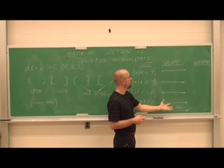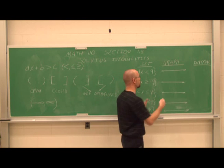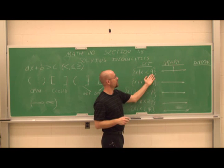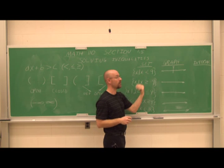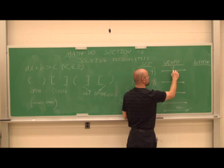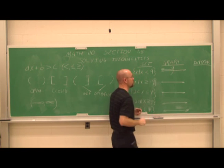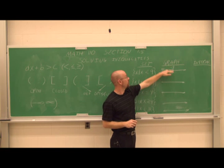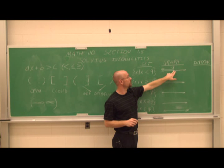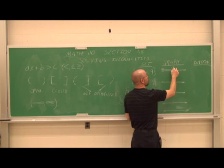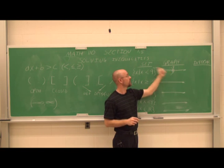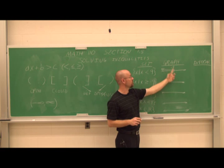Let's see what x less than 9 looks like on a graph. Our number line has no units, so we apply our own. If this value is 9 and x is less than 9, that means any value to the left on the number line. Because it's not equal to, I'm going to use a parenthesis. You could also use an open circle — it means the same thing as a parenthesis, but I prefer parentheses or brackets.